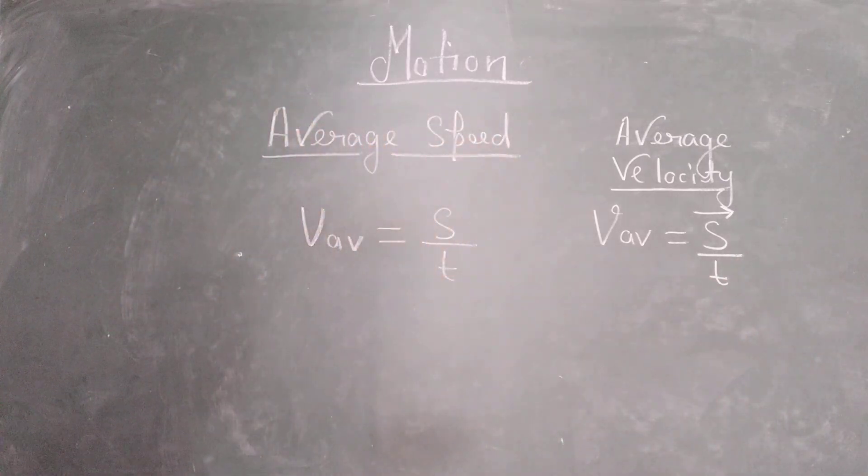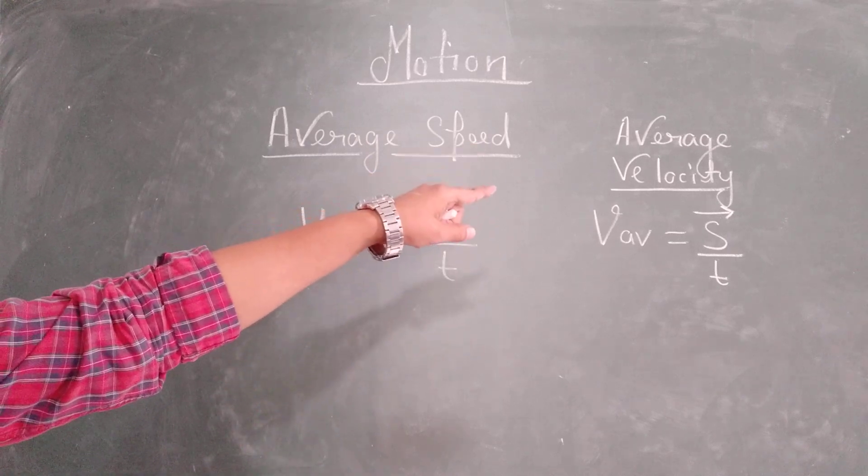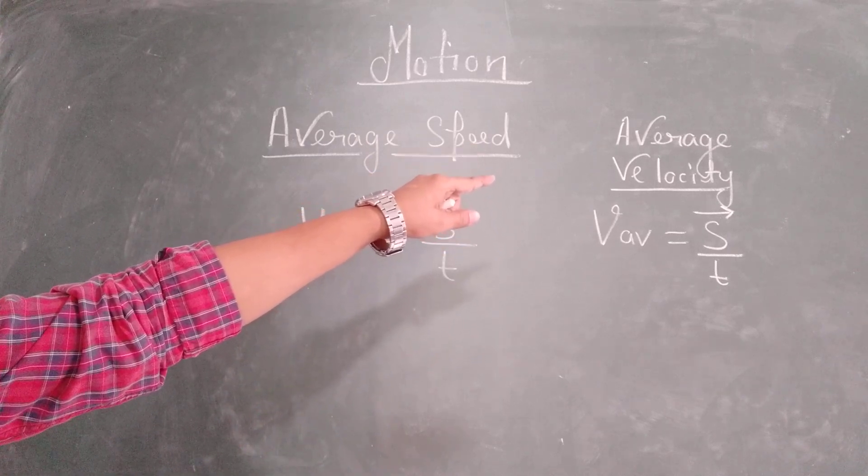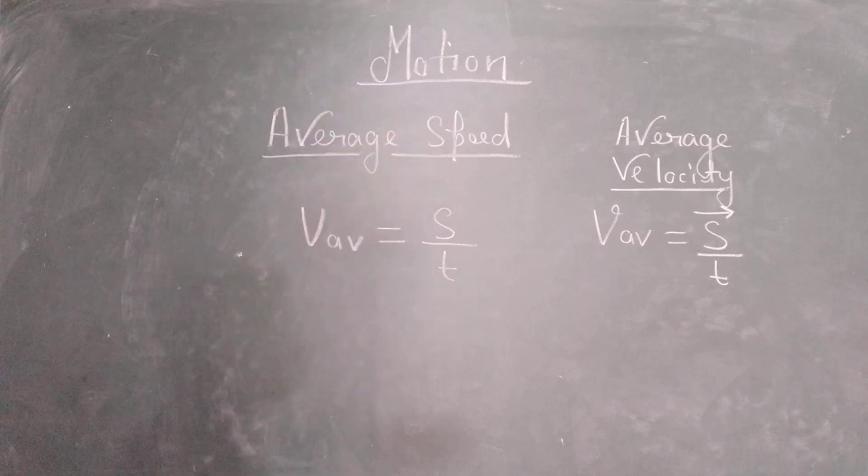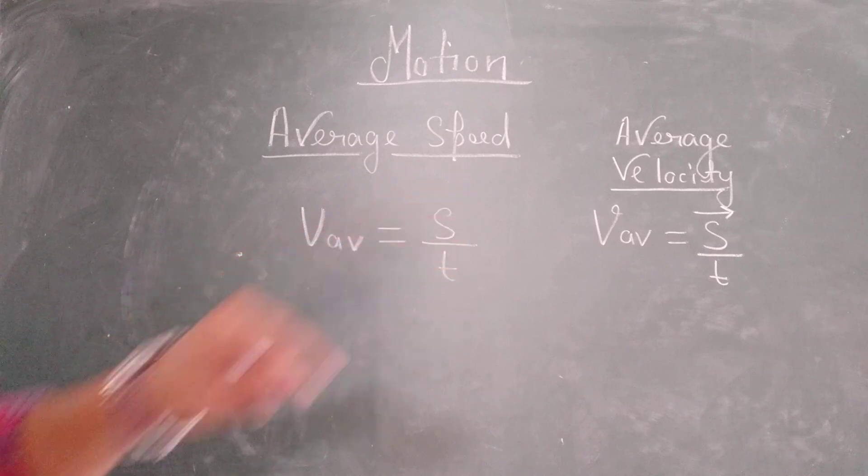On the other side I have written with which letter average velocity is denoted. Average velocity is denoted with small v and accompanied with av. Average velocity is equal to displacement by time taken. As you can see there is an arrow above S. If there is an arrow, consider that it is a vector quantity. So S with arrow is displacement and T is time.